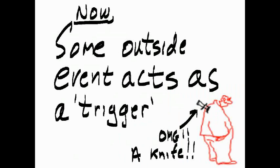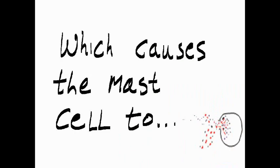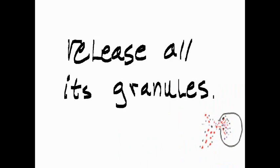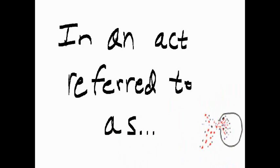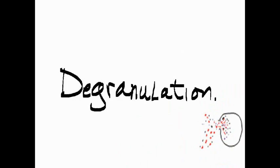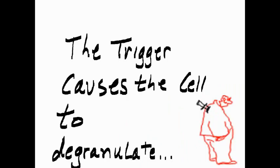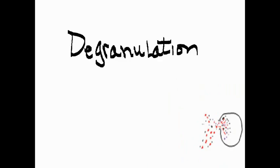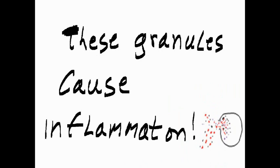Some outside event acts as a trigger — like a knife — which causes the mast cell to release all its granules, in an act referred to as degranulation. The trigger causes the cell to degranulate. These granules cause inflammation.